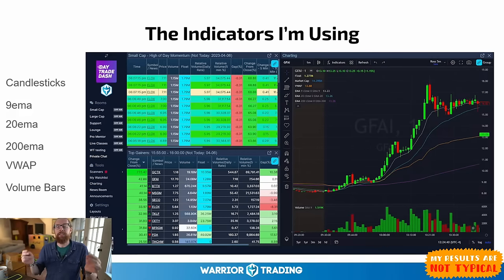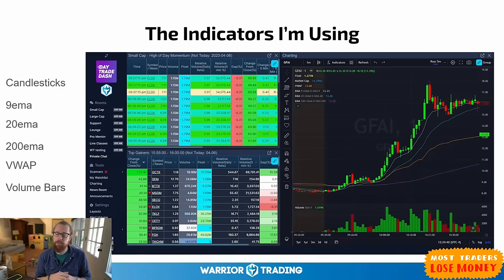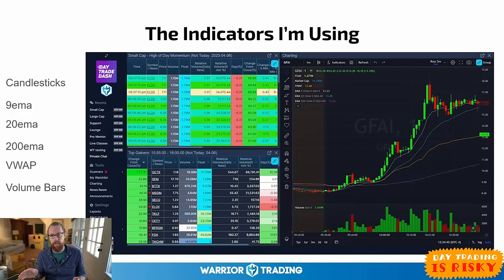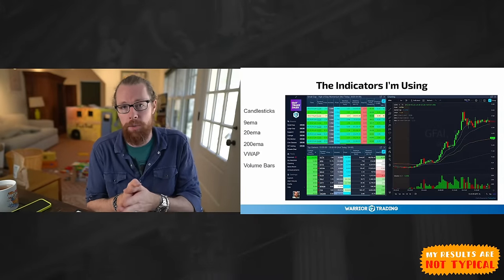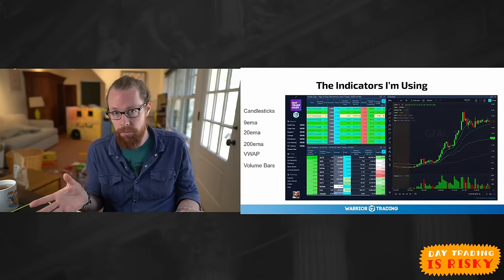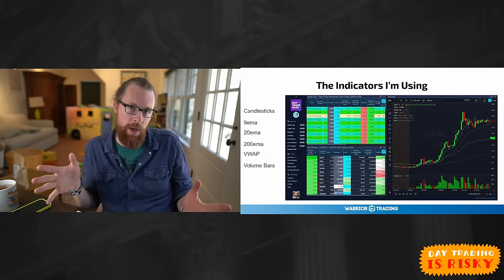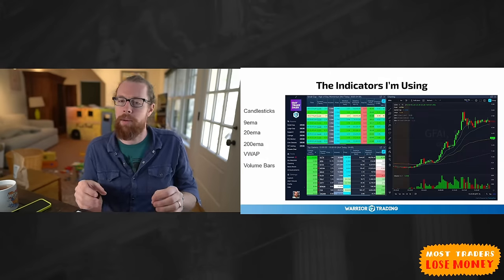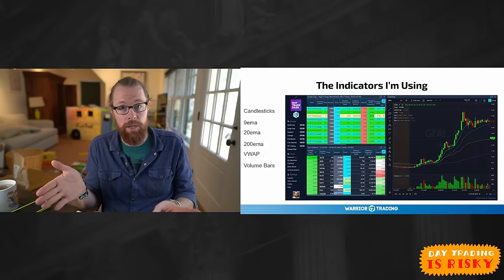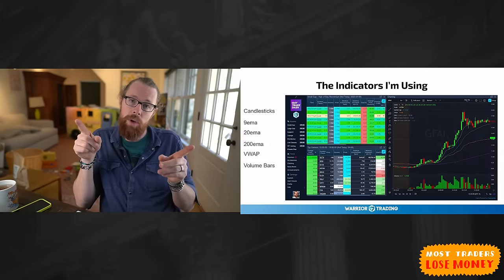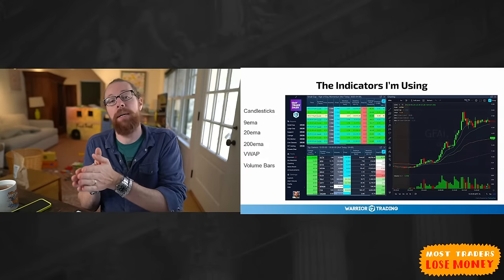I would encourage you to step back and ask yourself: big picture, what are traders who are finding success doing? What indicators are they using? Not the people who are selling you indicators, but people who are actually trading and actually making money — what are they doing that's different from what you're doing? If you were doing everything a profitable trader was doing, wouldn't you in turn be a profitable trader? There's something different that you're doing, and we've got to figure out what successful traders are doing and then look in the mirror at what you're doing.